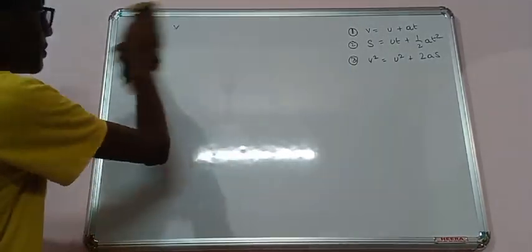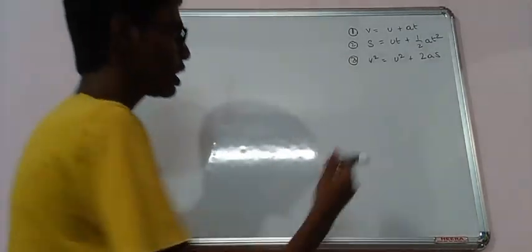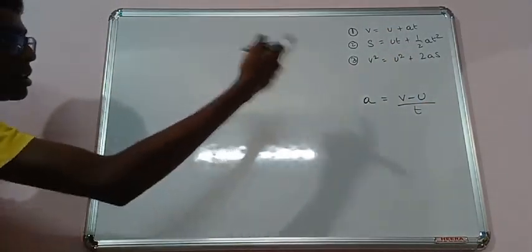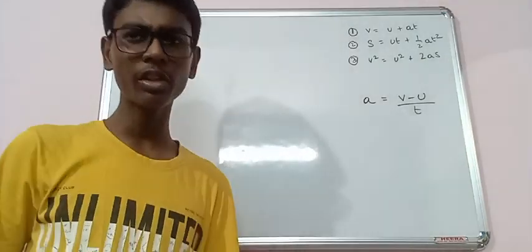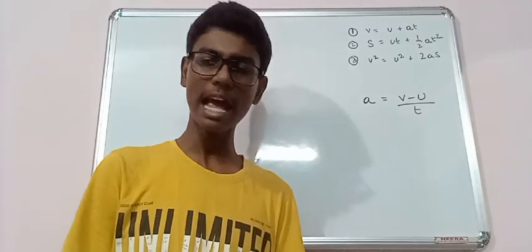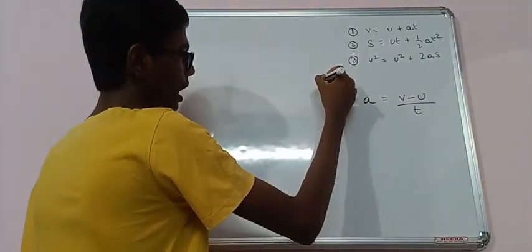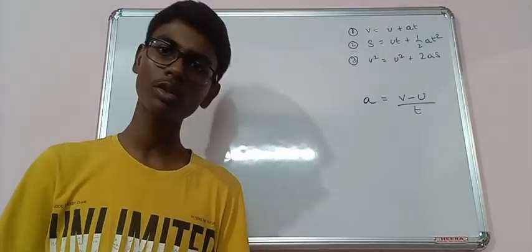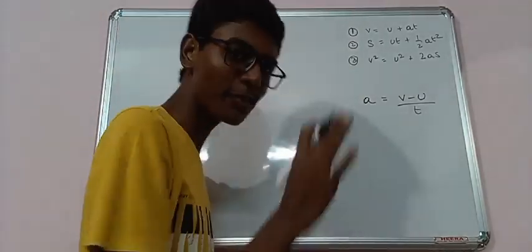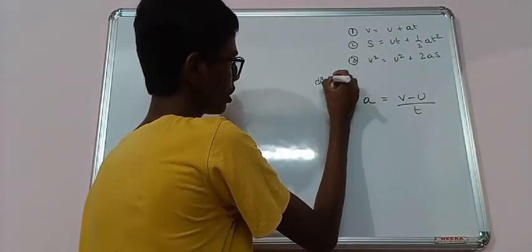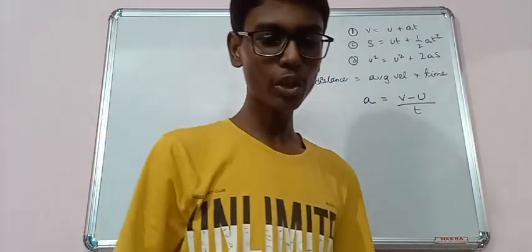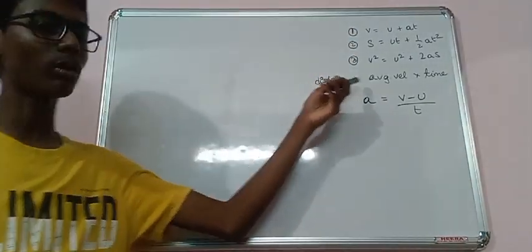Let's see the second one. So using the formula A equals to V minus U by T, we can derive the first formula. Second formula is S equals to UT plus half AT squared. Now in one of my previous videos, I don't remember which one, so if you check there, just go through the description of the videos. You will see the agenda and there you can find that somewhere I have explained velocity equals to displacement by time or speed equals to distance by time.